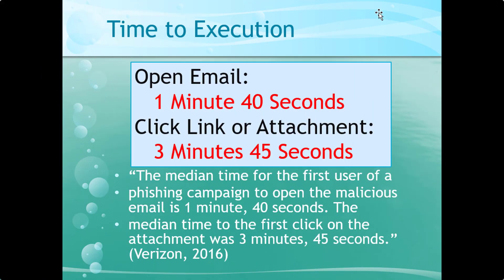Time to execution: when you get a phishing email, most of us don't always pay attention to our email right away, but on average a person will open an email within one minute and 40 seconds, and it takes three minutes and 45 seconds before they've clicked that link or attachment. A lot of people don't look carefully, or it looks like somebody they know, so they just click — boom — and they've executed malware.